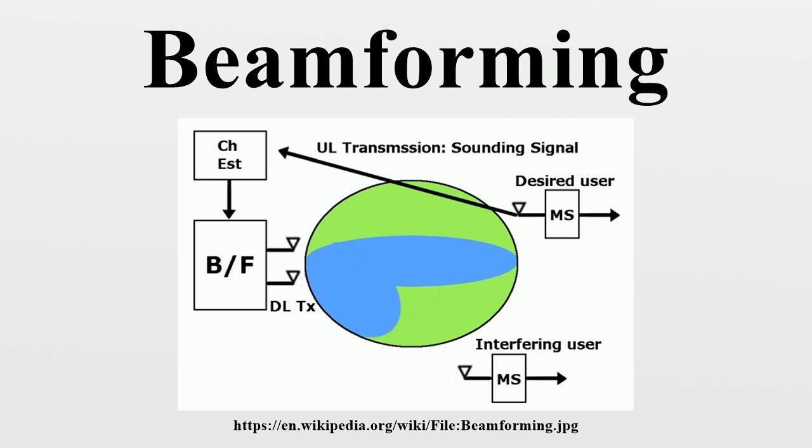In the receive beamformer the signal from each antenna may be amplified by a different weight. Different weighting patterns can be used to achieve the desired sensitivity patterns. A main lobe is produced together with nulls and side lobes. As well as controlling the main lobe width and the side lobe levels, the position of a null can be controlled.